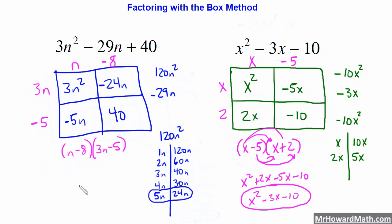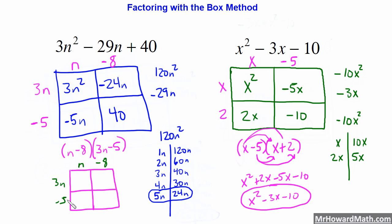We can check this. Using the box method to multiply these two binomials: N minus 8 and 3N minus 5. 3N times N is 3N squared, 3N times negative 8 is negative 24N, negative 5 times N is negative 5N, and negative 5 times negative 8 is plus 40. Notice that this box looks the same as the original one, so we know it's right. We get 3N squared minus 24N minus 5N plus 40, and combining like terms gives 3N squared minus 29N plus 40.